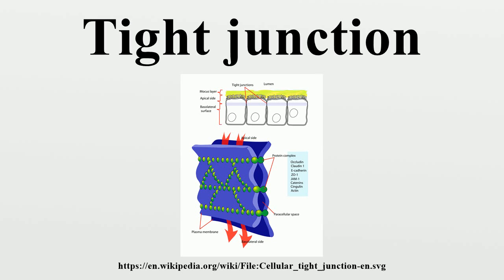Tight junctions prevent the passage of molecules and ions through the space between plasma membranes of adjacent cells, so materials must actually enter the cells in order to pass through the tissue.